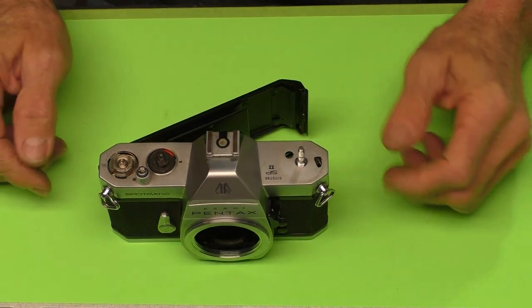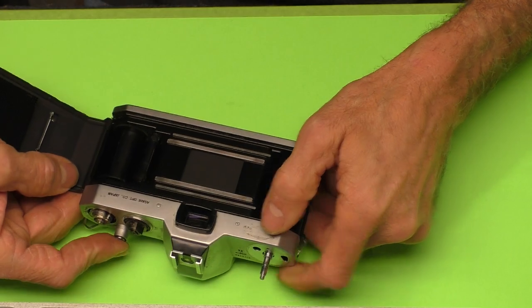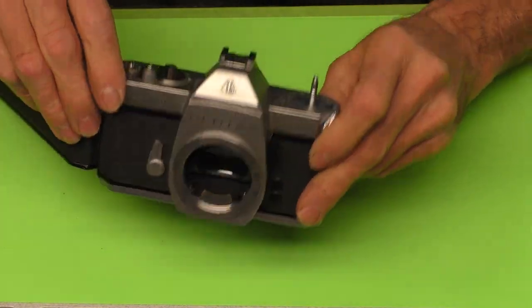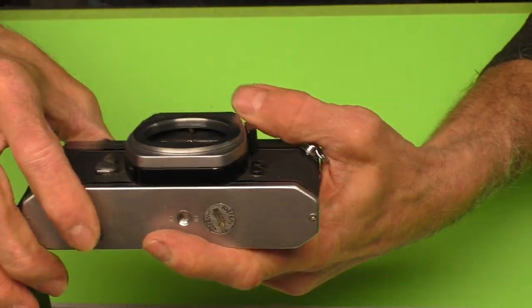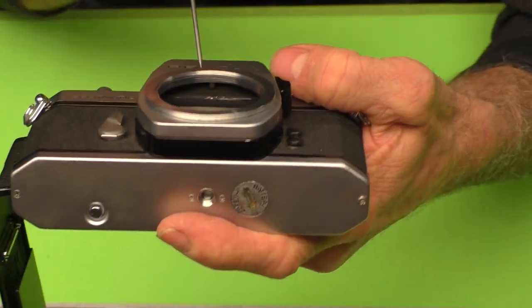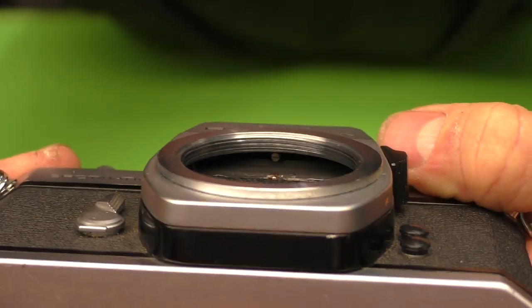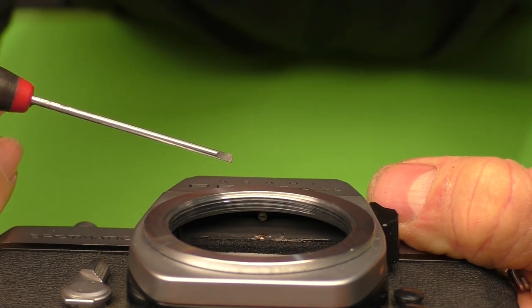Basically, we're down to some screws now. There's a Phillips head screw here. There are two slotted head screws here and here. And on the Spotmatic, the other screw that holds everything on the top is hidden inside here. Let's see if I can get here and get a picture for you. It's right there. You see that small slotted screw?